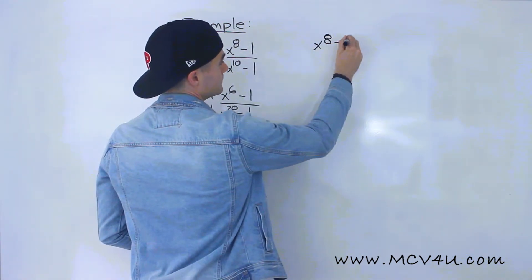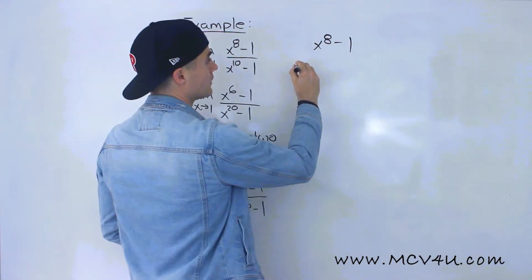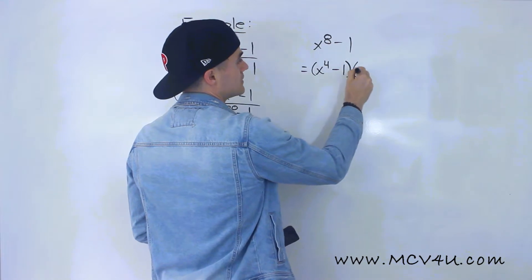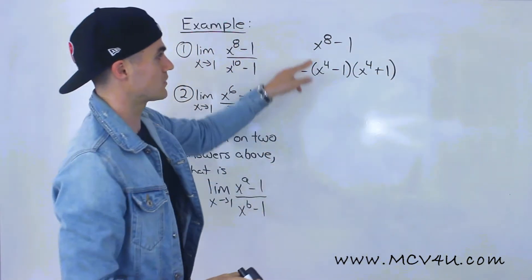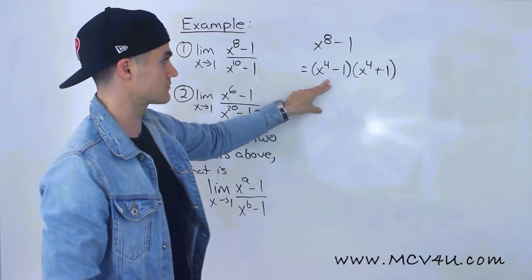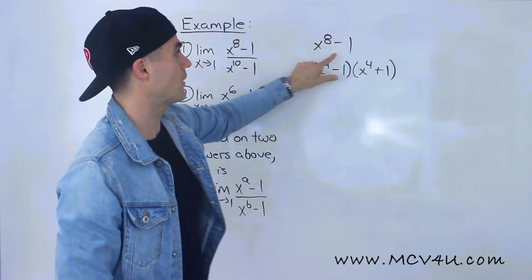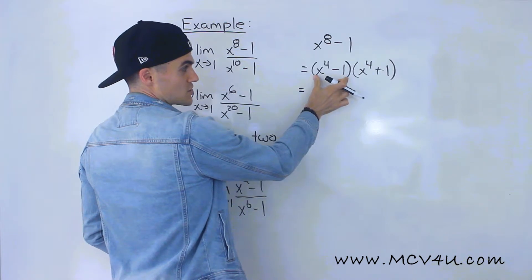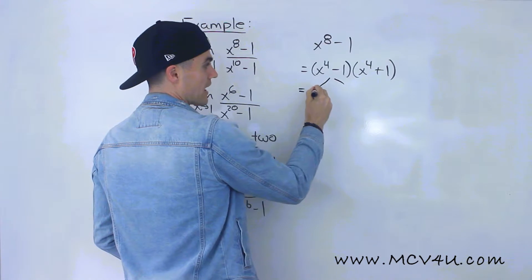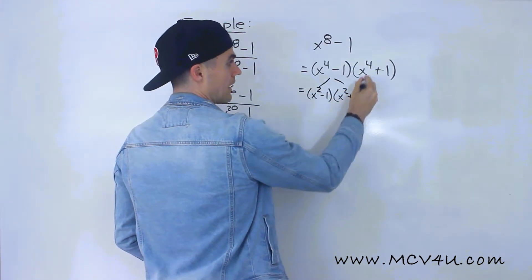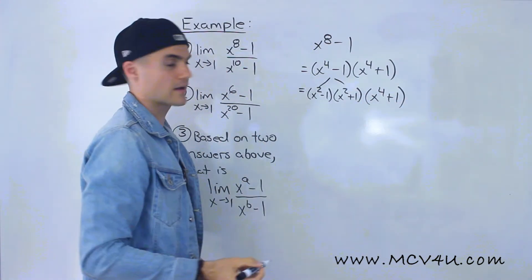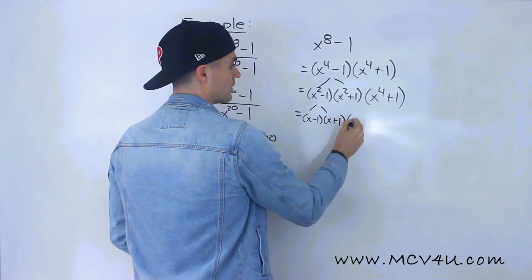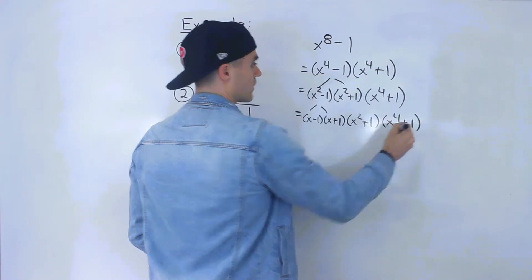Let's factor x to the power of 8 minus 1. There are multiple ways to do this. First, I'll do a difference of squares: x to the power of 4 minus 1, times x to the power of 4 plus 1. Then we can further apply difference of squares to x to the power of 4 minus 1, giving x squared minus 1 times x squared plus 1, leaving x to the power of 4 plus 1 as is. Finally, x squared minus 1 factors into x minus 1 times x plus 1, then x squared plus 1, and x to the power of 4 plus 1.